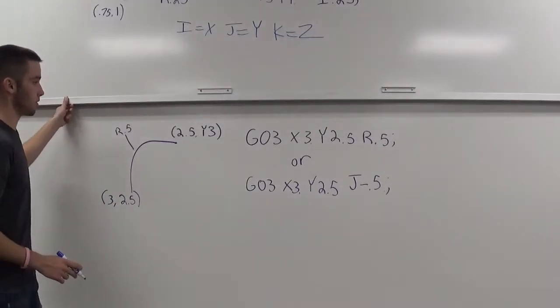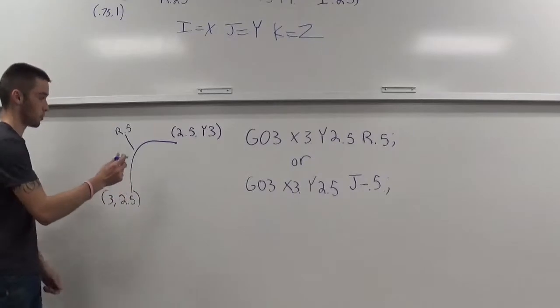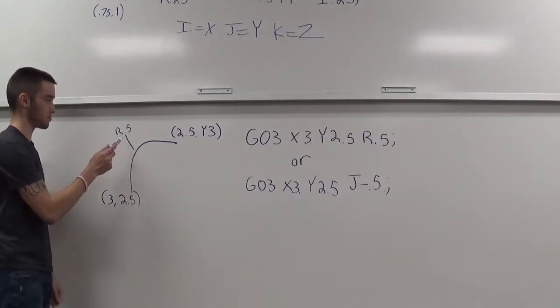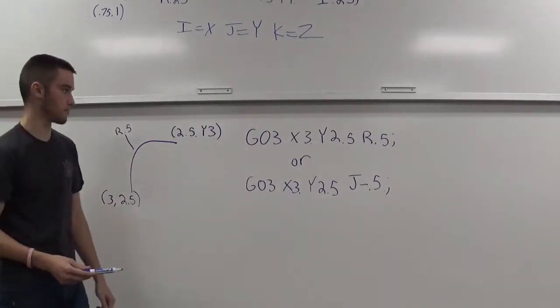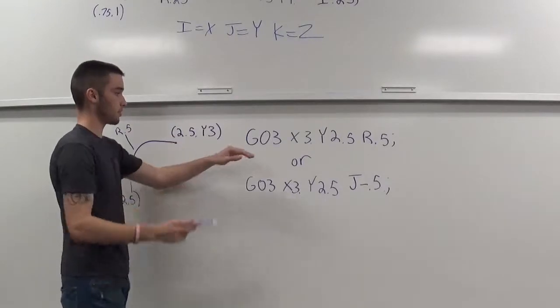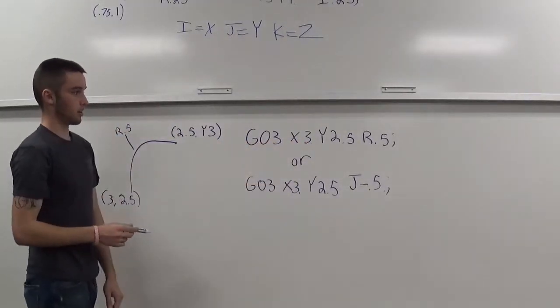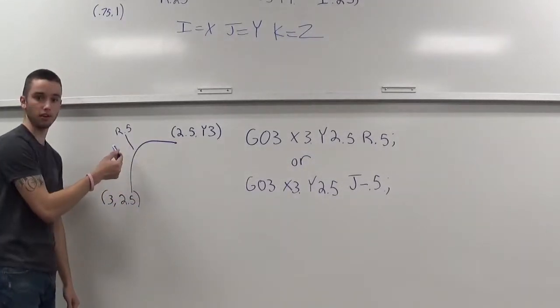And here, we have a G03. We'll be starting here and ending here. Our radius this time is half inch, 0.5. Same rules as last time. You have to start here. Your x and your y location is where the tool is going to end up. And we have R and you just plug in the half inch radius.